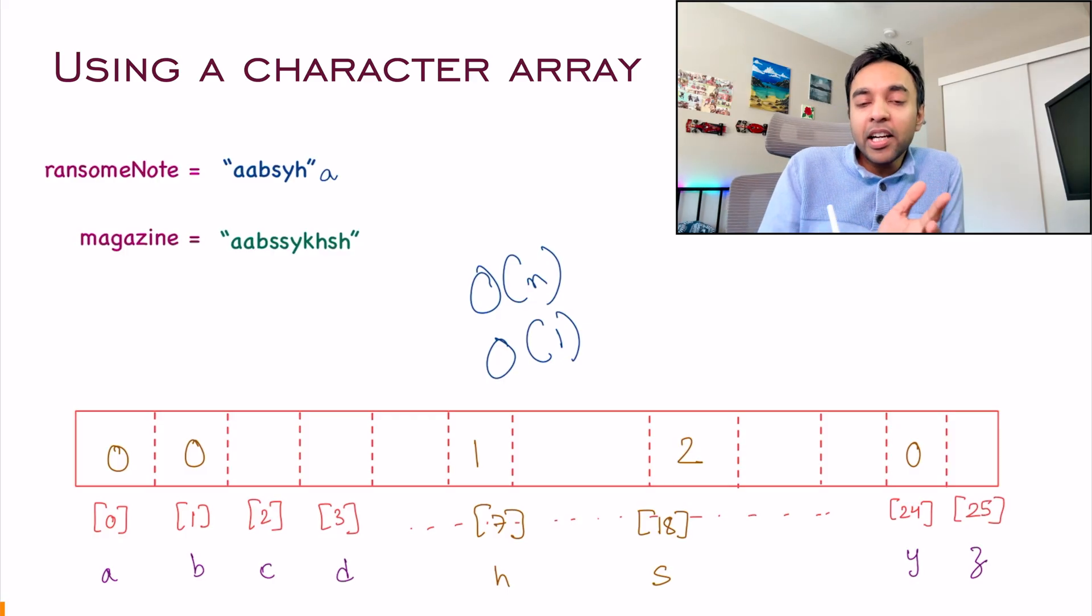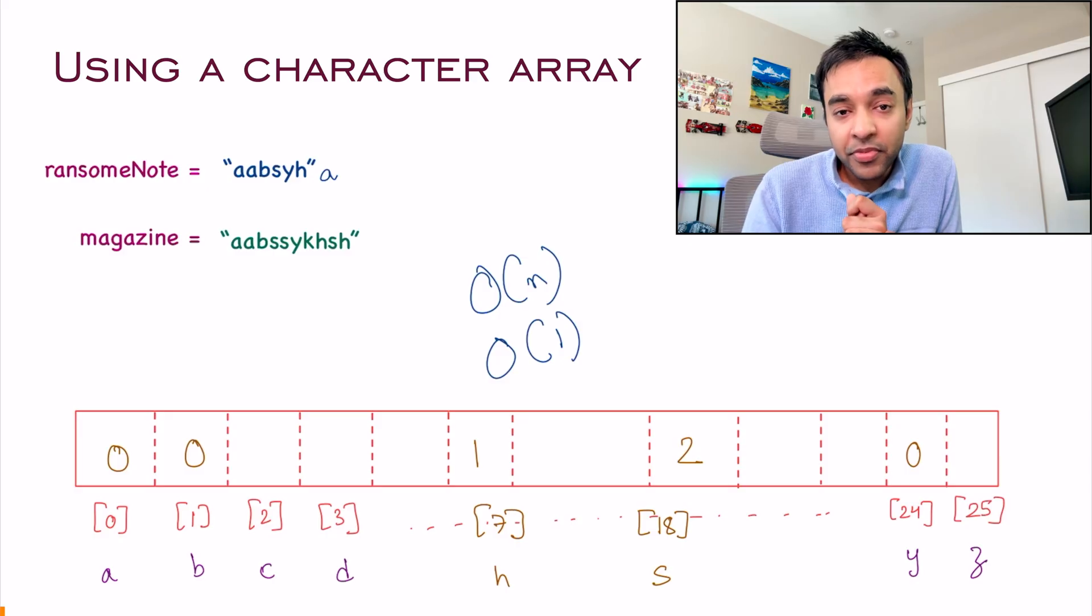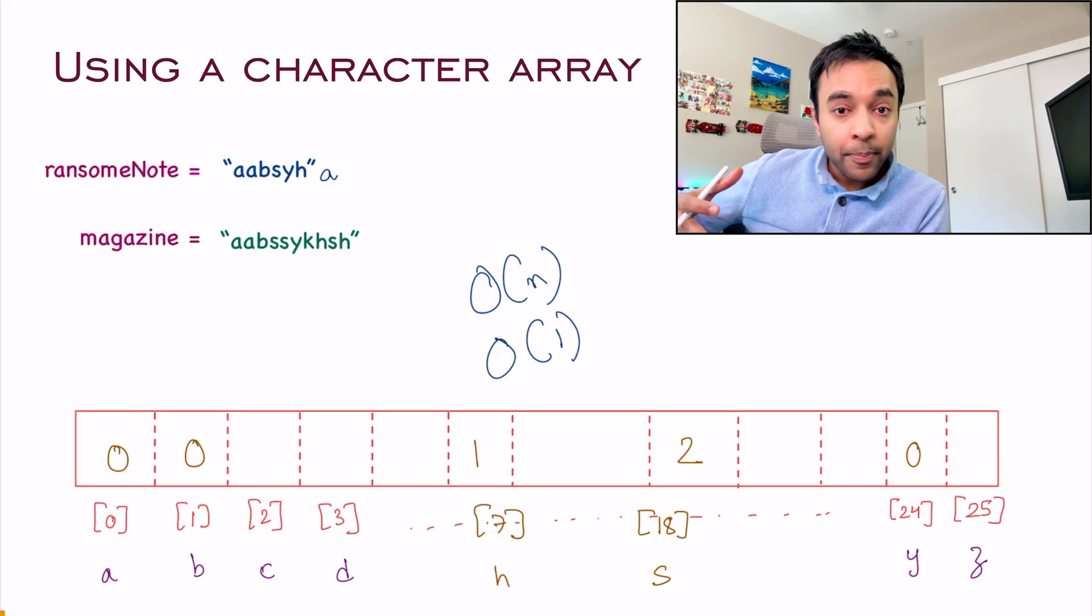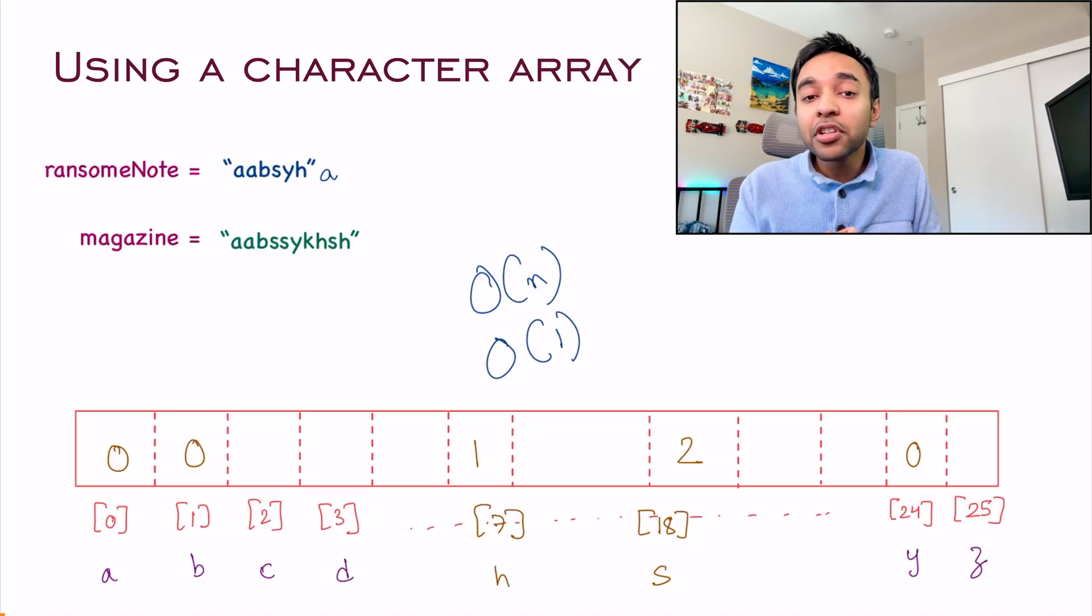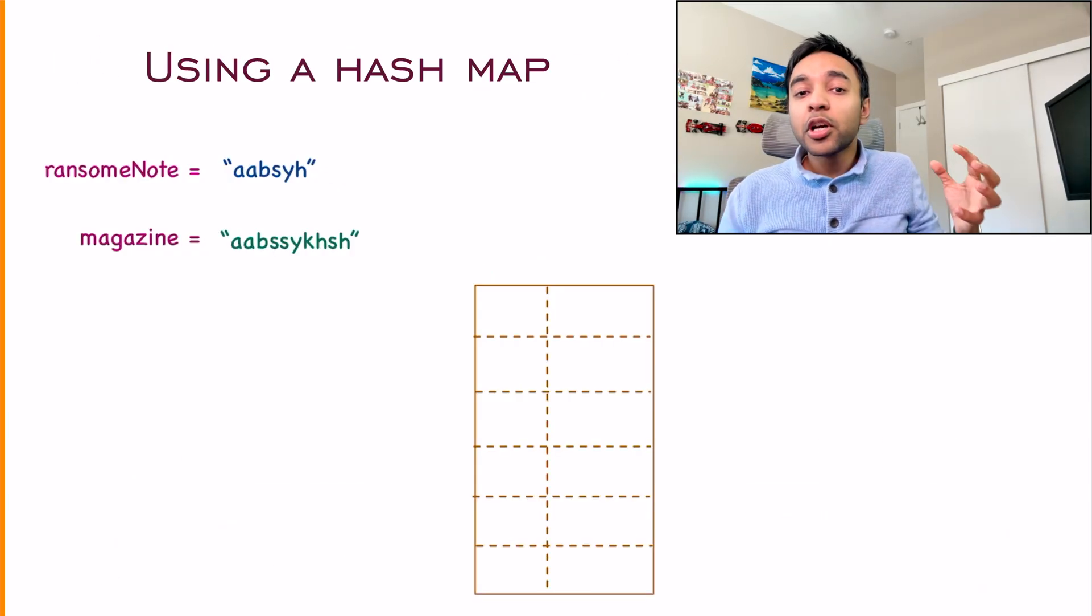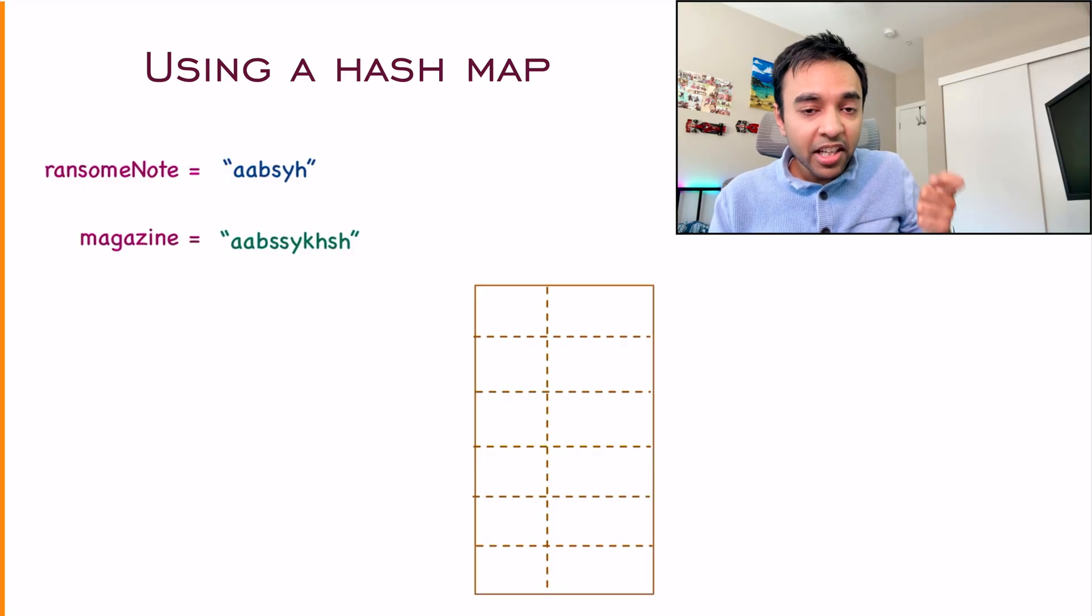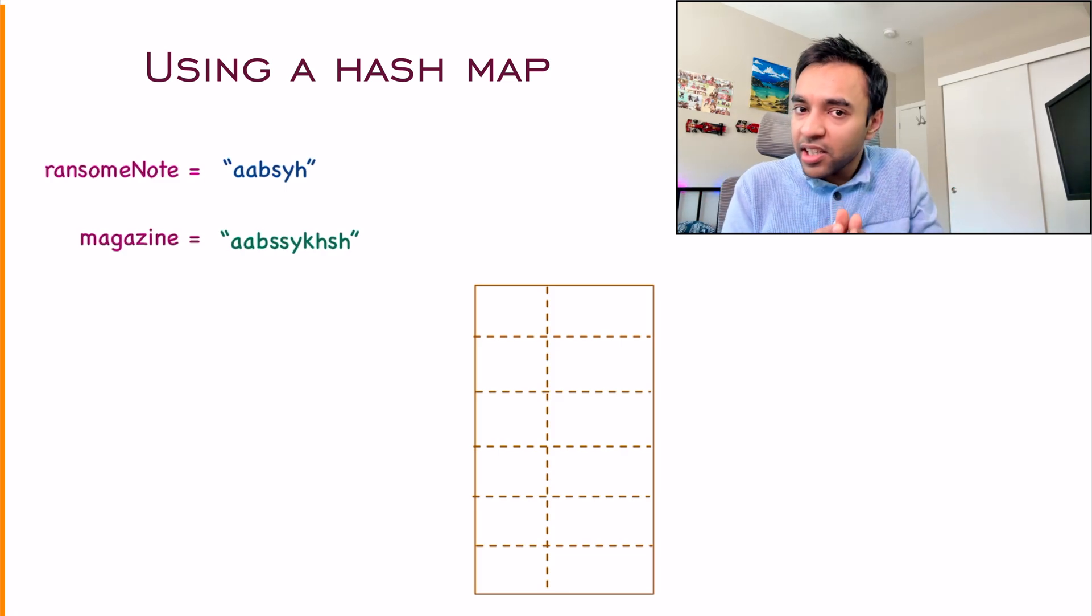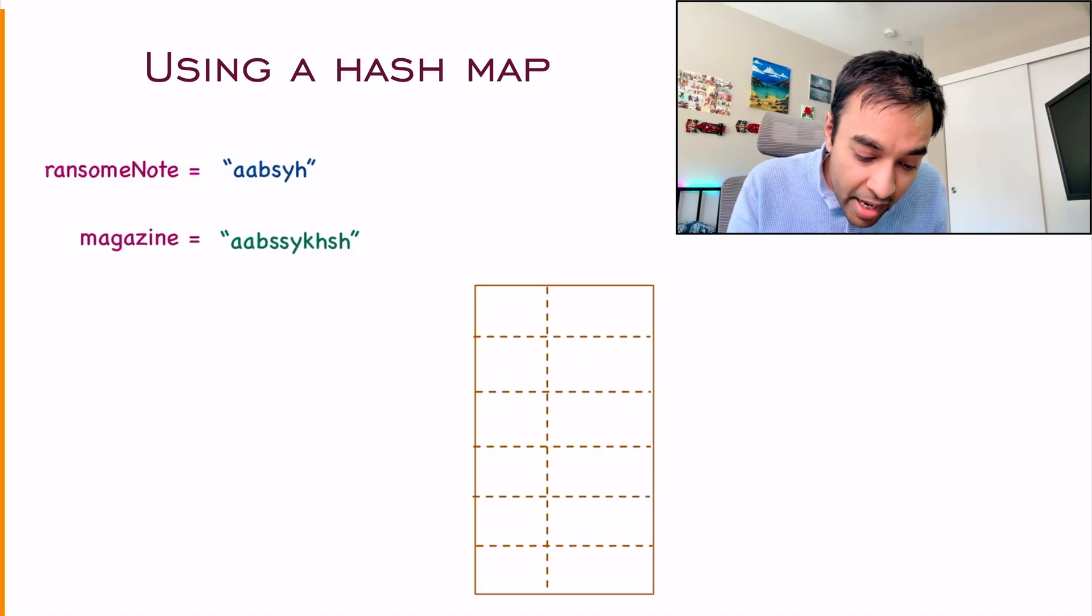This solution works perfectly and will pass all test cases. Now, your interviewer might ask, okay, this is a very good solution. What other solutions can you come up with? And this is just a test about how many other data structures do you know about? How can you think more? They want to make sure you're not just learning up a solution and presenting it. You want to explore. That is where you can talk about another solution as well, and that involves the use of a data structure called a hash map.